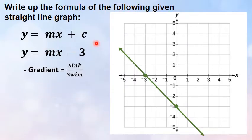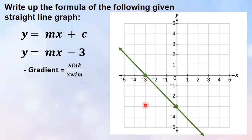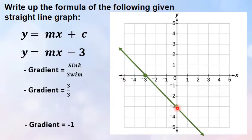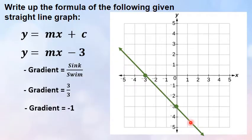With a negative gradient I've taught you to use sink over swim. If you work from left to right, starting from the first intersection and looking for your second dot — how did I get from my first coordinate to my second dot? How many did I sink with and how many did I swim with? If you look, you went down three and you swam three. So gradient equals three over three, which makes it one.